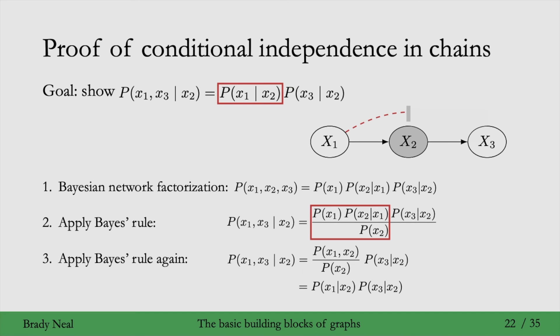Alright, so we just proved that x2 blocks the path from x1 to x3 in chains. Right, we proved that x1 and x3 are conditionally independent given x2.